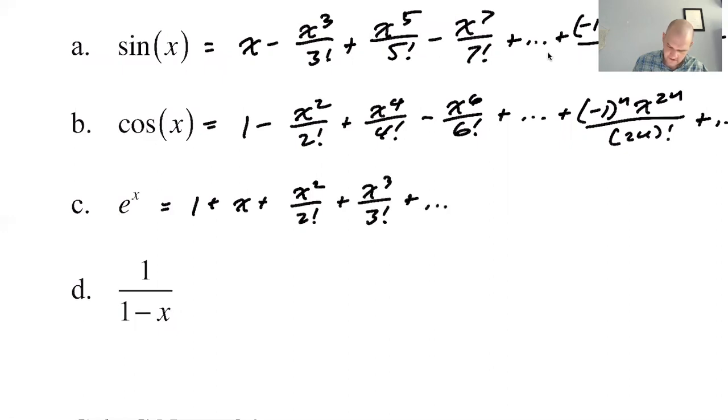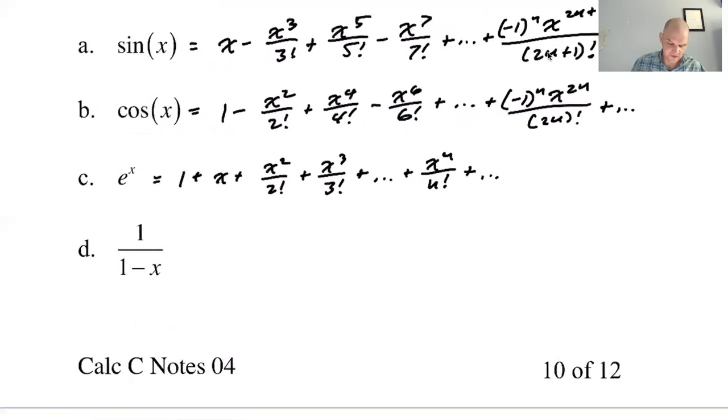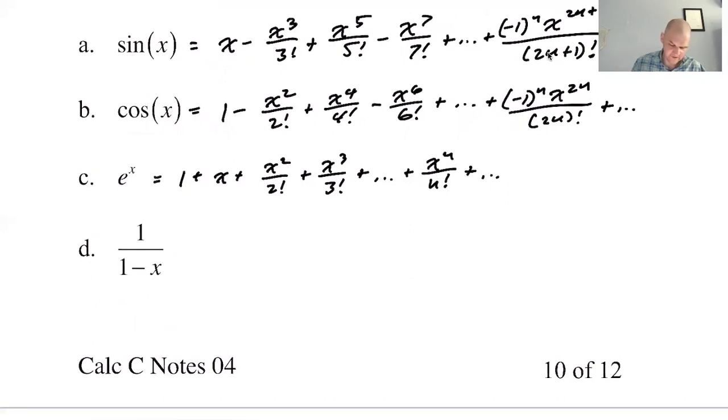So in some ways, it's like the nicest one. You just get the nth term is just X to the n over n factorial. You got to put the plus dot dot dot at the end, or it's not infinite. Then it's just a Taylor polynomial. And then you shouldn't be saying equals. You should be saying approximately equal to.